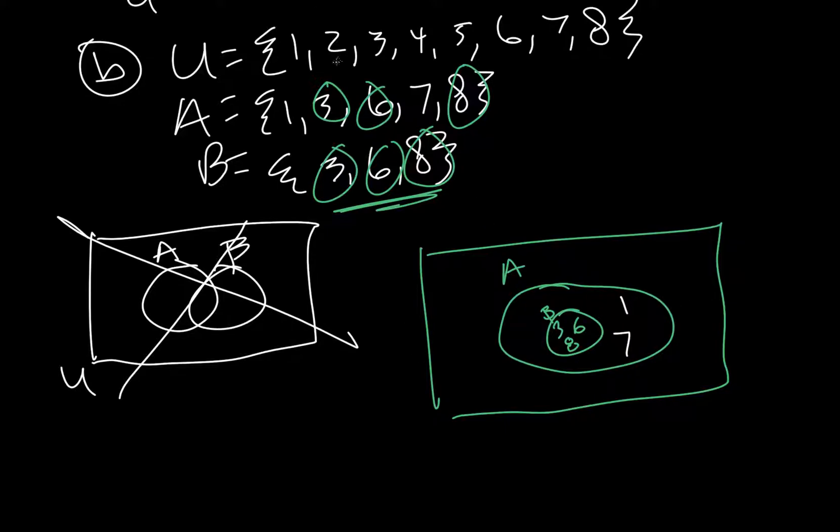So, one, we didn't use two. Three, we didn't use four. We didn't use five. We got six, seven, eight. So, those three numbers need to show up just on the outside right here. Just anywhere like that.